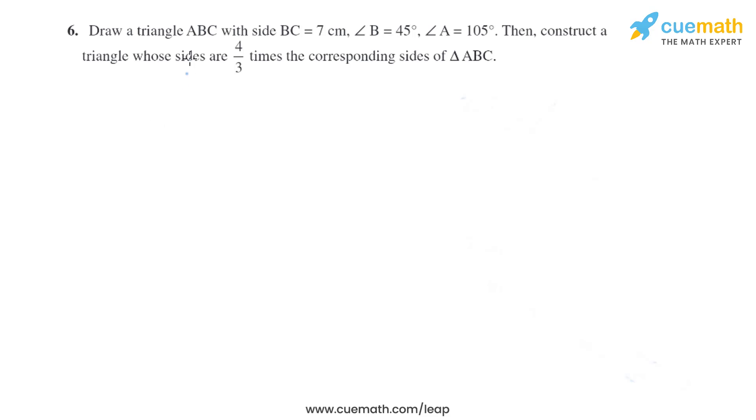Question 6 of this exercise says: Draw a triangle ABC with side BC equals 7 centimeters, angle B equals 45 degrees, angle A equals 105 degrees. Then construct a triangle whose sides are 4 by 3 times the corresponding sides of triangle ABC.